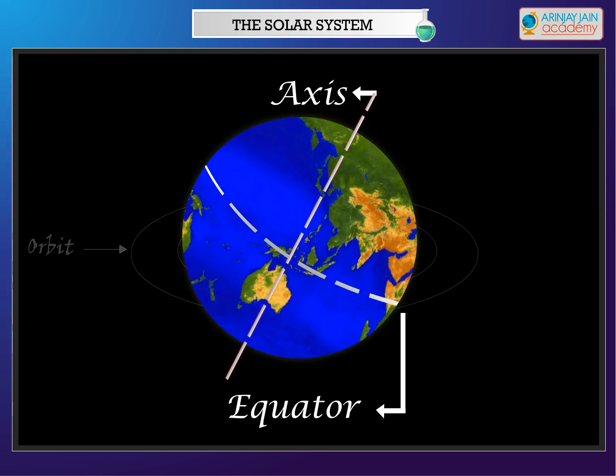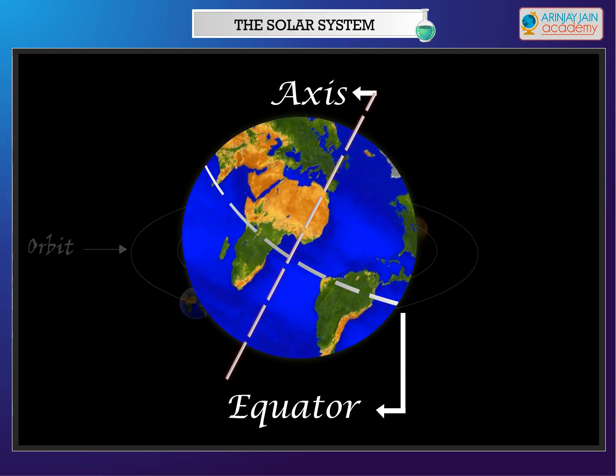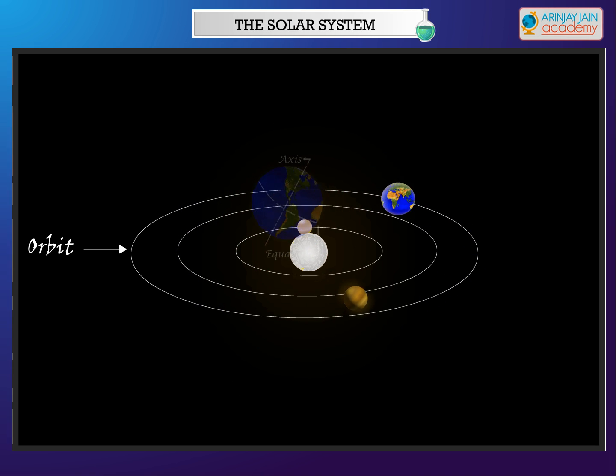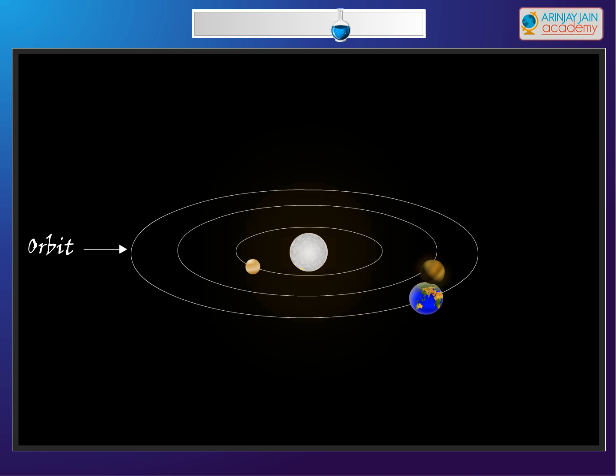Thus, the Southern Hemisphere has winter. After a few months during the revolution, the Earth reaches the other side of the sun. Now, the South Pole tilts towards the sun while the North Pole tilts away from the sun.